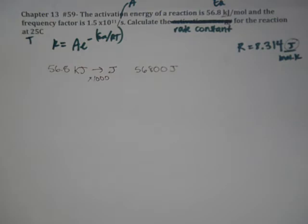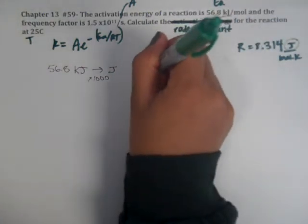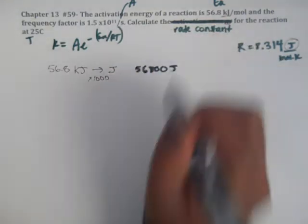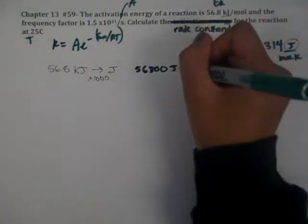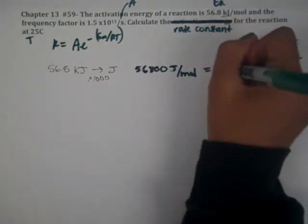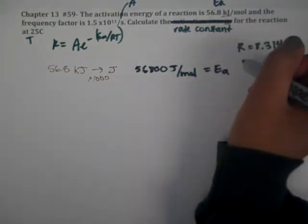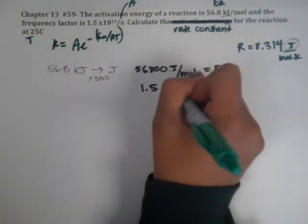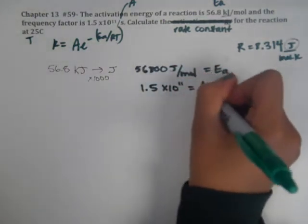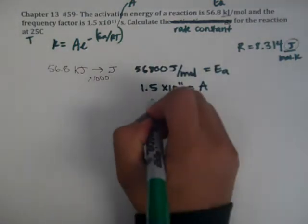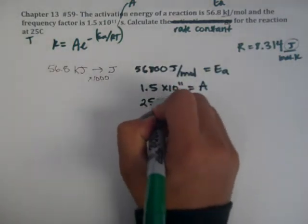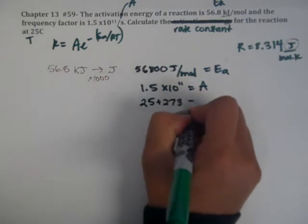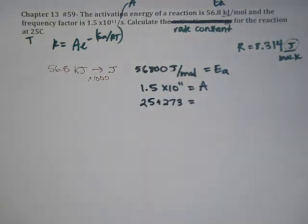So we have 56,800 joules per mole. That's our Ea. We have the frequency factor, 1.5 times 10 to the 11th, which is our A. And then we have our T. We're going to have to add 273 to get to Kelvins.